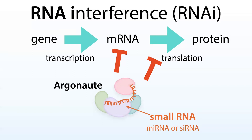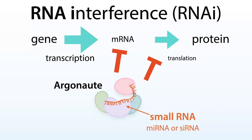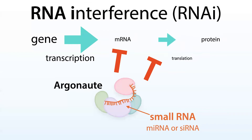At its heart is an Argonaute or Ago protein, and it gets instructed which messenger RNAs to target based on the sequence of a small RNA — this can be a microRNA or an siRNA — that the Ago protein binds to. This small RNA acts as a guide to direct the Argonaute protein to the messenger RNA, leading to its degradation and/or translational repression, and subsequently a decrease in the corresponding protein.